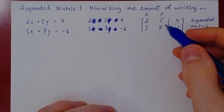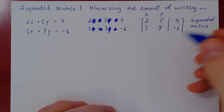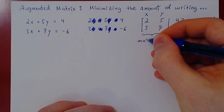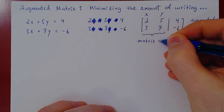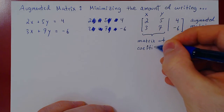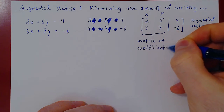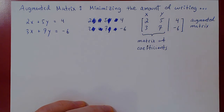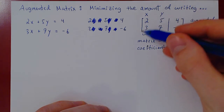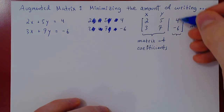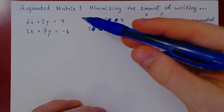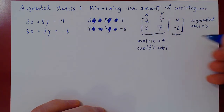The augmented matrix consists of two parts. The first block contains the coefficients, so we call this the matrix of coefficients — a matrix being simply a rectangular array of numbers. The second part is a single column containing the constant terms, which we call the column of constants.